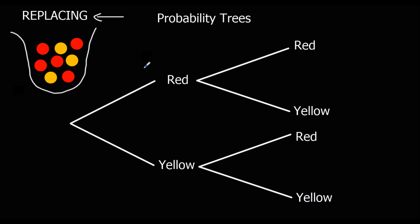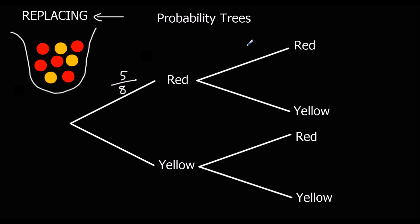So let's start looking at the probability. The first event — the probability of getting a red. There's one, two, three, four, five reds, five reds out of eight in total. So it's five out of eight. Now I'm replacing the marble. I've taken that marble out, but then I'm putting it back. So there's still the same amount of marbles in there for the second event — it hasn't changed. So there's still five out of eight reds for the second event.